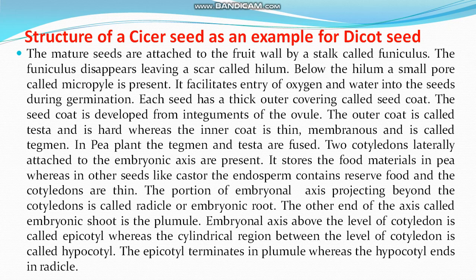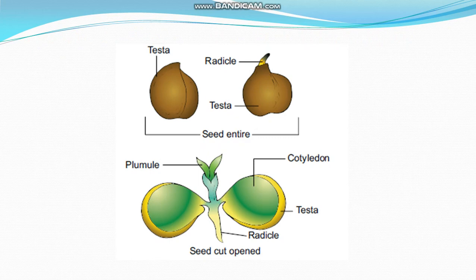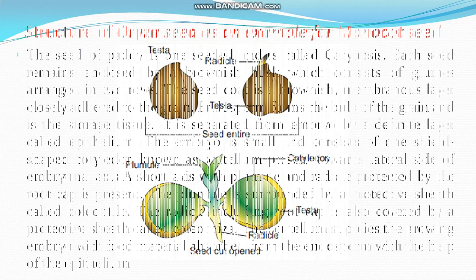The embryonal axis above the level of the cotyledons is called the epicotyl. The cylindrical region between the level of the cotyledons is called the hypocotyl. The epicotyl terminates in the plumule, and the hypocotyl ends in the radicle. This is the complete structure of the dicot seed.